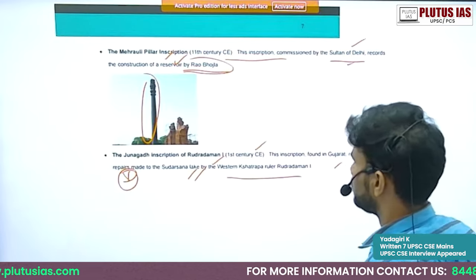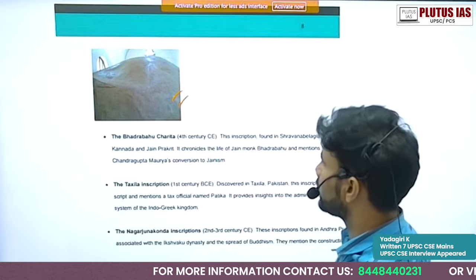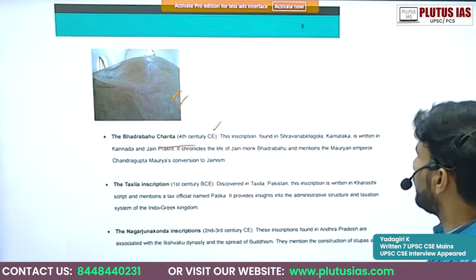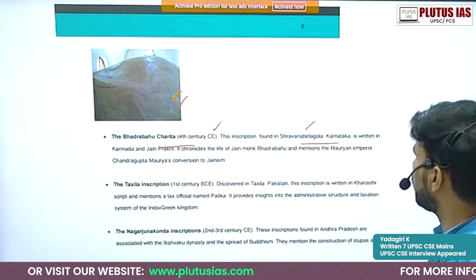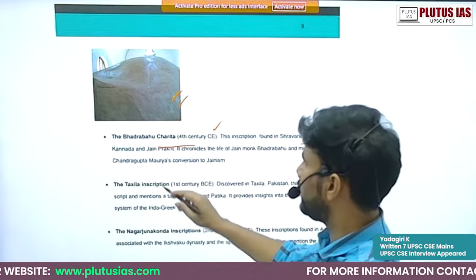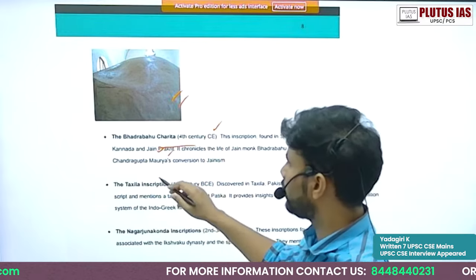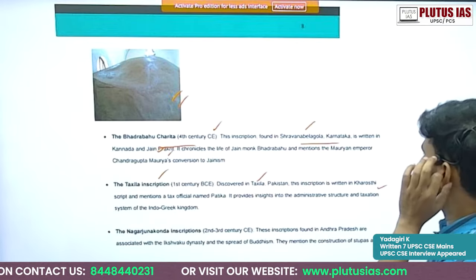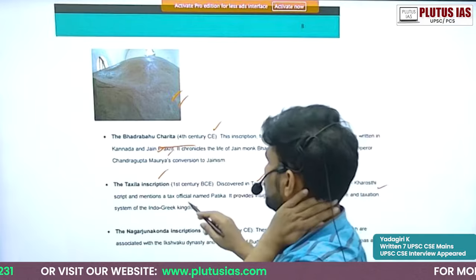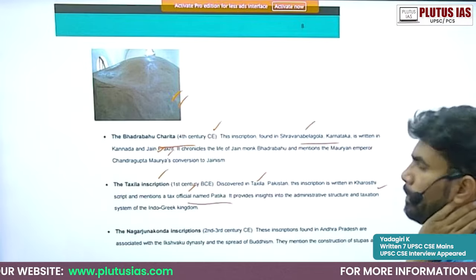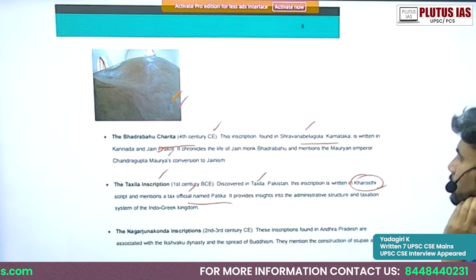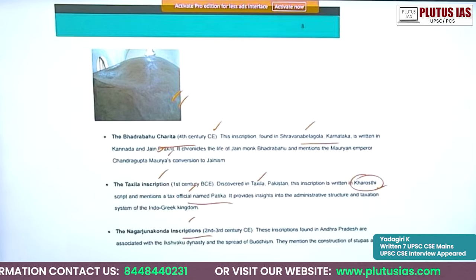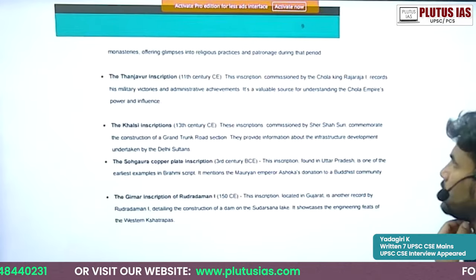The Bhadrabahu Charita Inscription, commissioned in the fourth century AD, is found at Shravanabelagola and is written in Kannada and Jain Prakrit. There is also the Taxila Inscription, discovered in Taxila, written in Kharoshti script, which mentions a tax official named Patika. The Nagarjunakonda Inscriptions were commissioned between the second and third centuries BC.